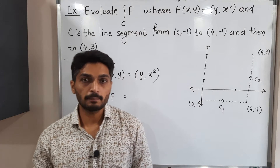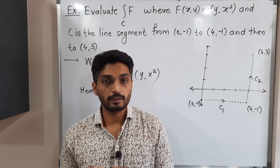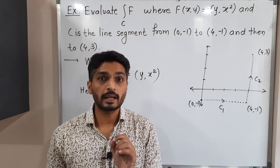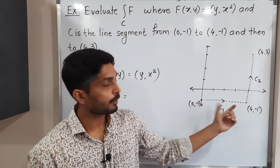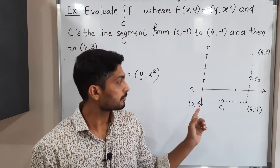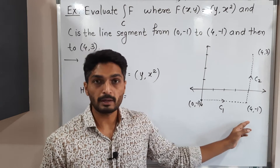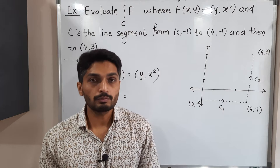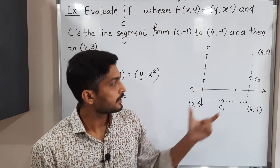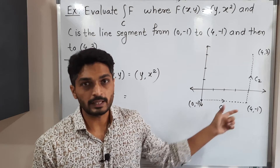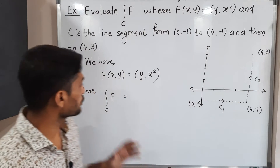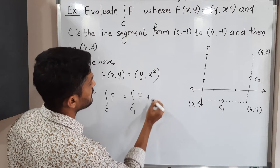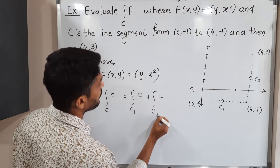Let us solve this example. We have a vector field f(x, y) defined as (y, x²) and we have to find the value of the line integral along a curve made up of two straight lines: one line from (0, -1) to (4, -1), and then from (4, -1) to (4, 3). We will divide this curve into two parts, C1 and C2, so the integral of f over C equals the integral over C1 plus the integral over C2.